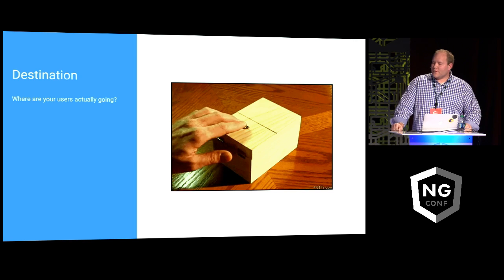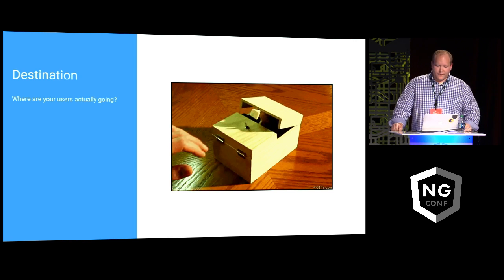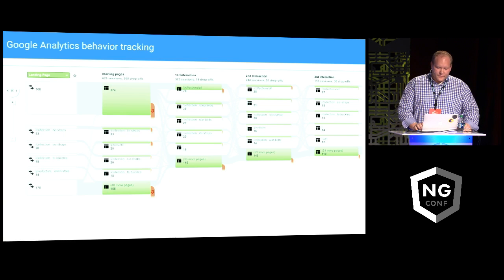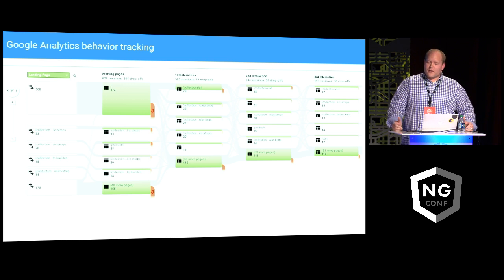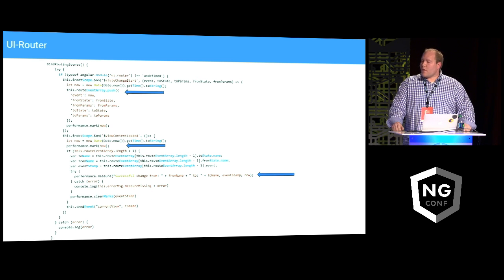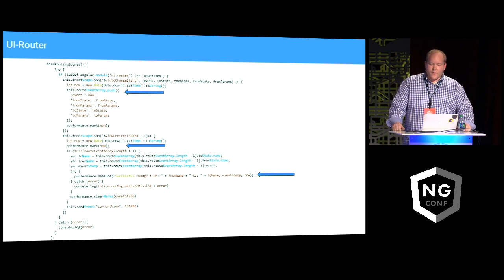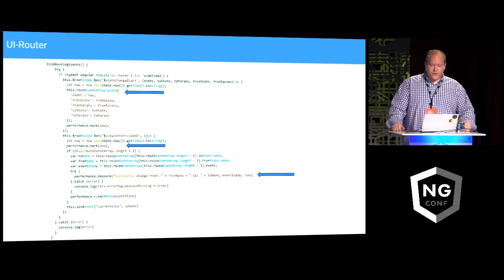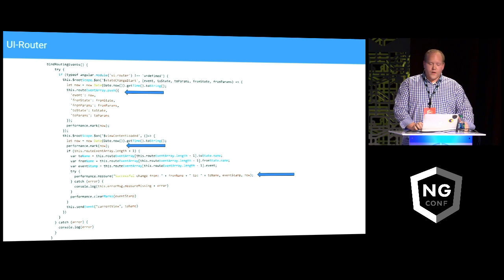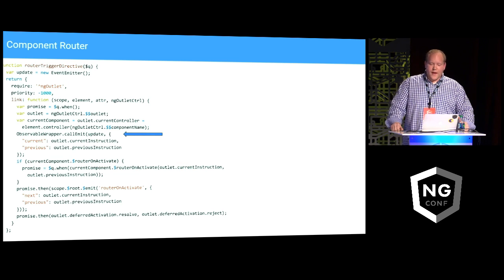And if that wasn't bad enough, sometimes we force our users to do the same thing over and over — opening a slide-out, for example. With Google Analytics out of the box, it doesn't track routing events. With UI Router we can get a little bit deeper into what our users are actually doing — by using the state change start and view content loaded events to get timings, we can actually see how long those state switches take. This lets us see not only how long a given route took to render, but if we have any slow resolutions. The same thing can be achieved by adding events to the new component router.